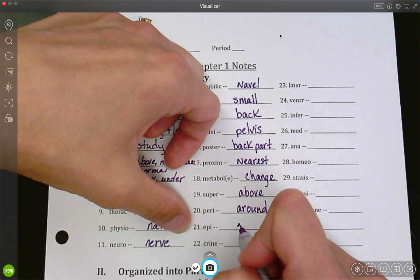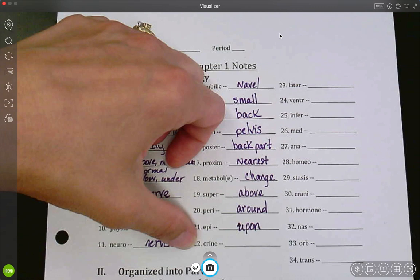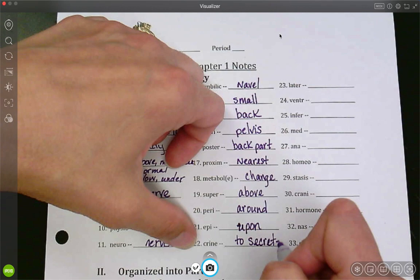Epi. Is upon. Now when I say upon, I mean like on top of. That's what upon means. Crin. Is to secrete. What does secrete mean? It means release.